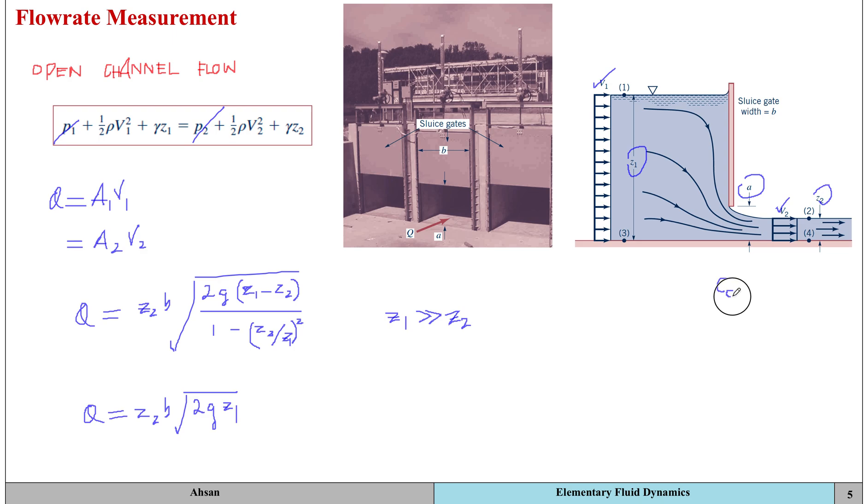This value is usually less than 1 for open channel flows or sluice gates. Usually it's around 0.61 depending on the ratio of A to z2 or A to z1. If the ratio of A to z1 is between 0 and 0.2, then your contraction coefficient is going to be equal to 0.61.